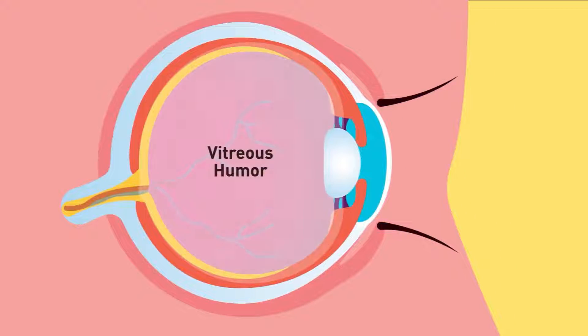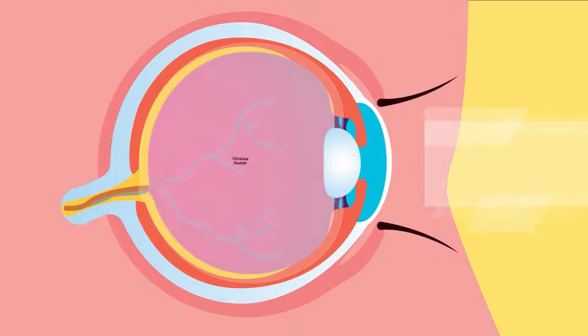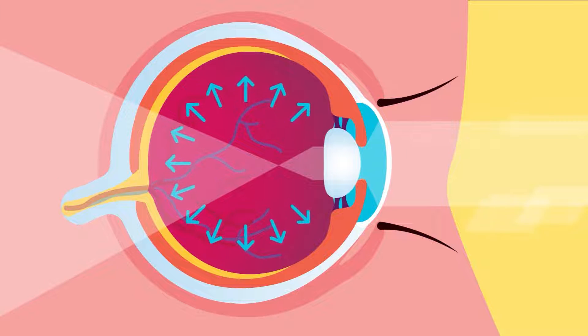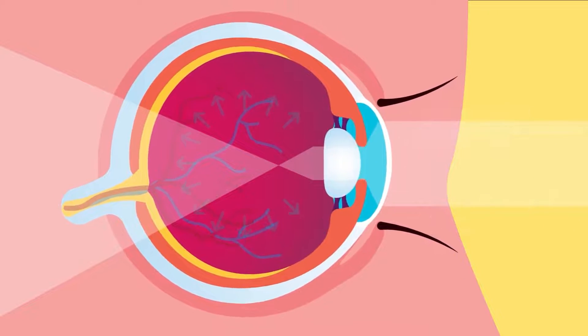Vitreous humor is a transparent jelly-like substance at the rear of the eye. It refracts light and, together with aqueous humor, maintains the shape of the eyeball.